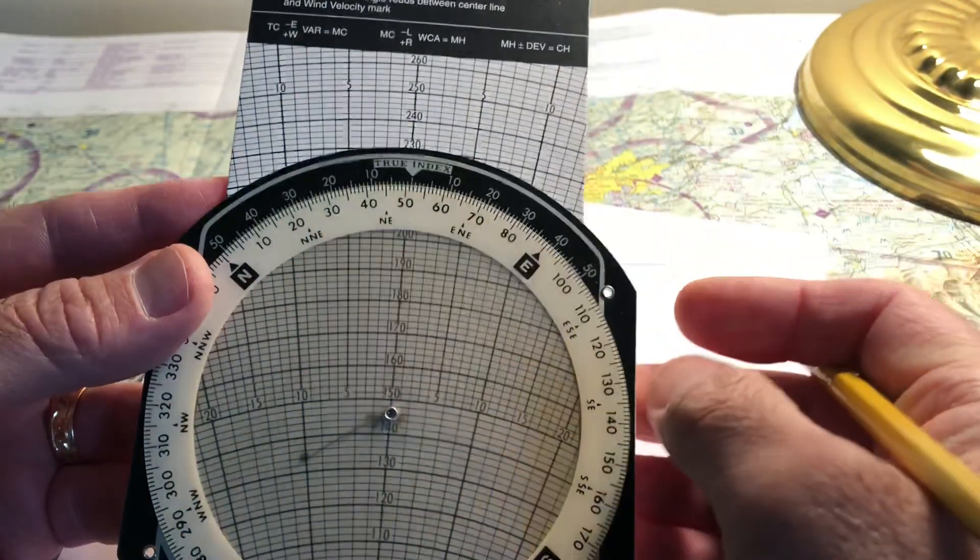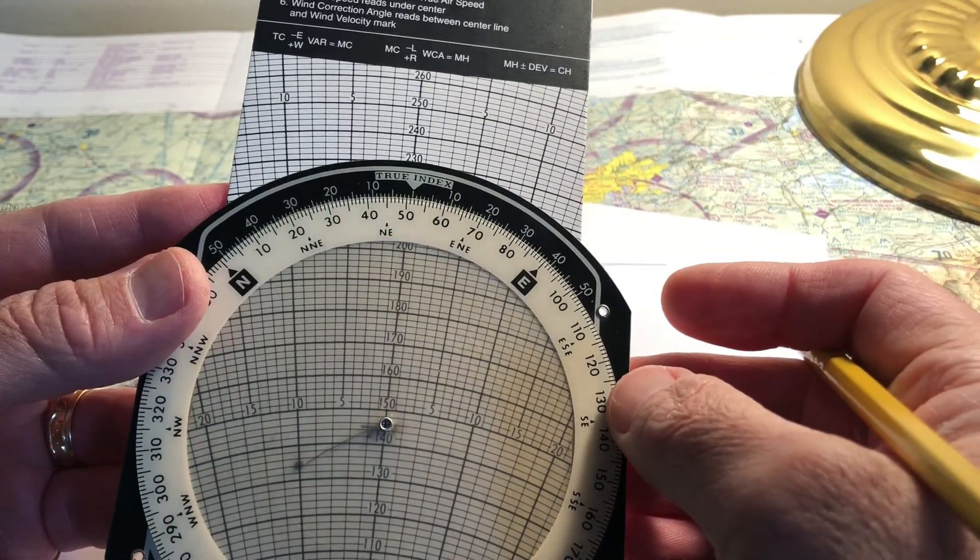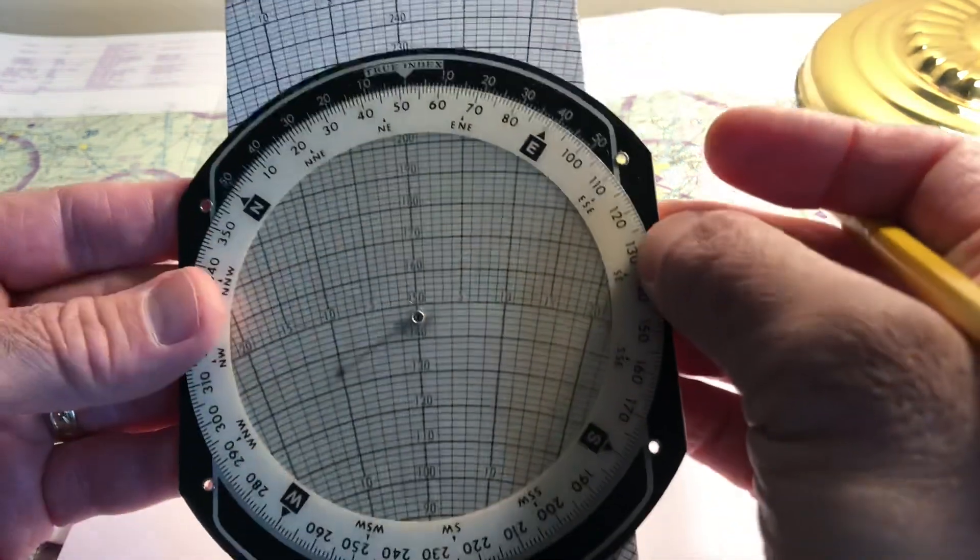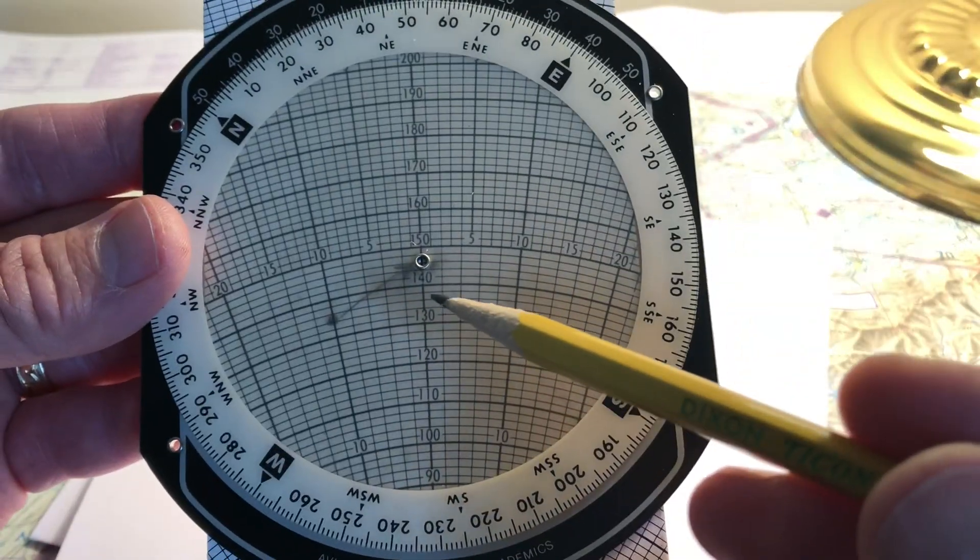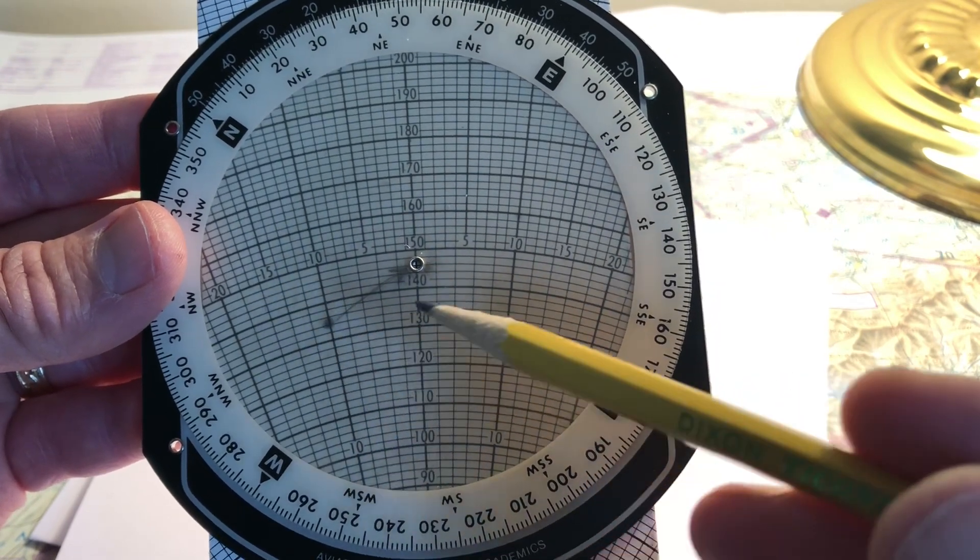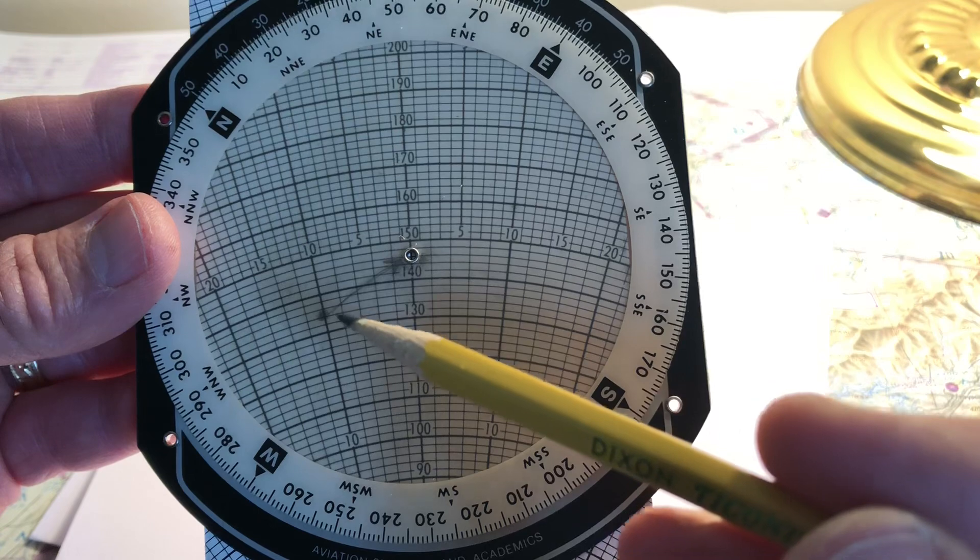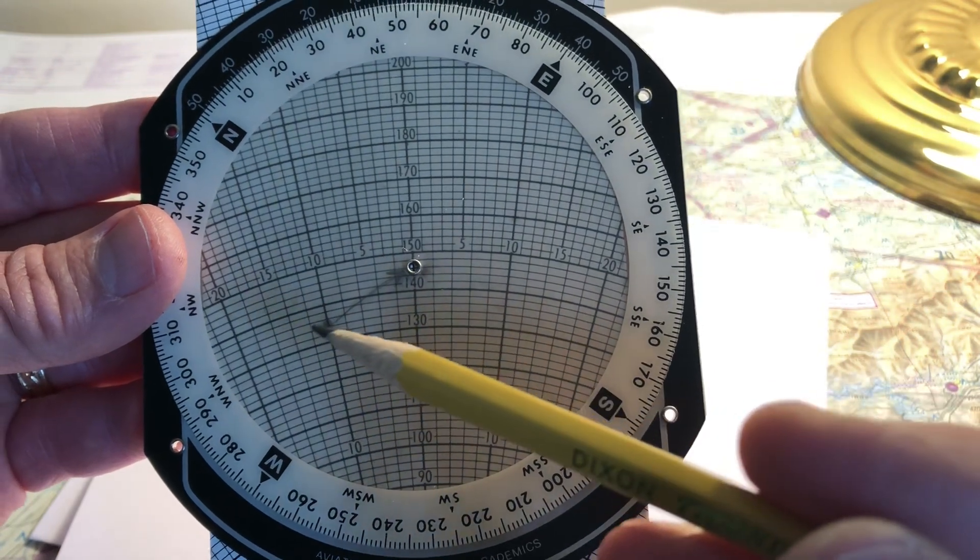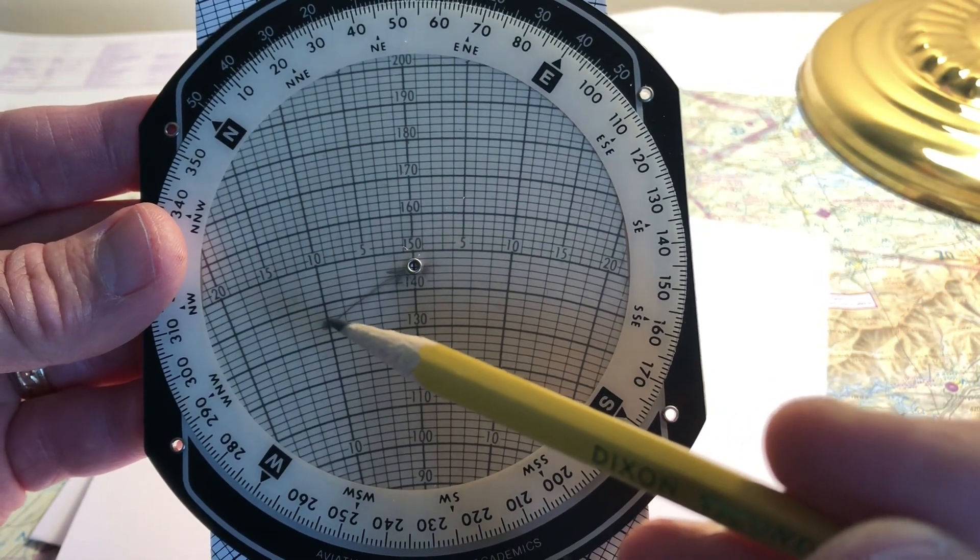And the last step, wind correction angle, reads between the center line and the wind velocity mark. So here's the center line and the wind velocity mark. And that's 10 degrees to the left. See, this is the 10 degree line. So 10 degrees to the left, remember, means that we subtract.